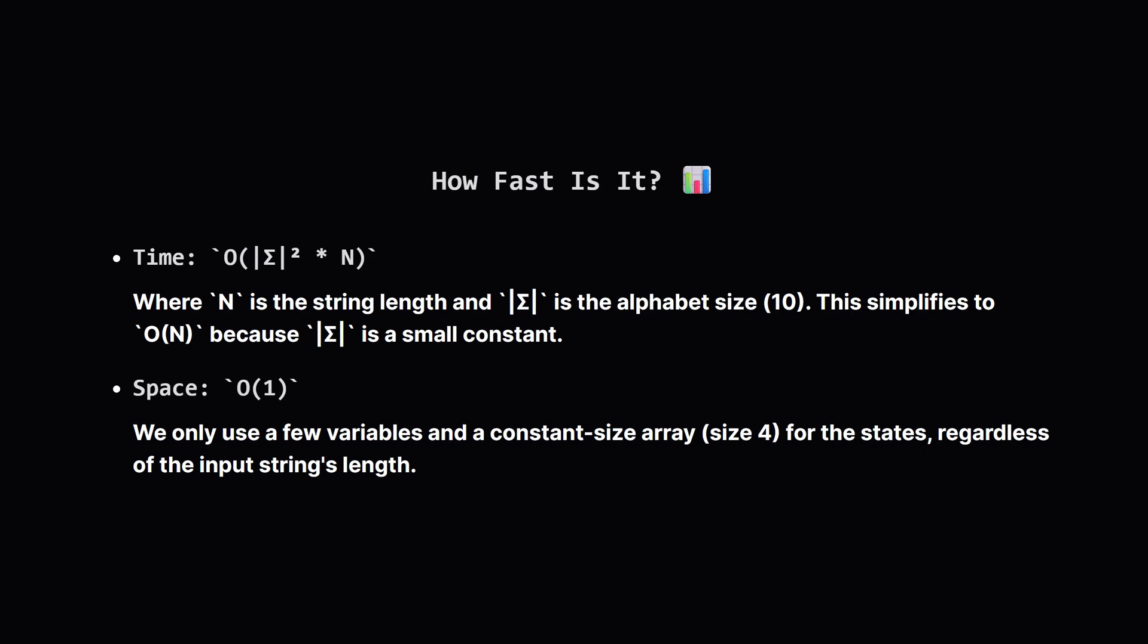So how much better is this approach? It's a huge improvement. The time it takes is proportional to the size of our alphabet squared times the length of the string. Since our alphabet is just the 10 digits, this is basically a constant, 90, times n. We call this big O of n, or order n time, which is very efficient. We just have to scan through the string a fixed number of times, and the space we use is tiny. We just need a few variables, and that little state tracking array of size 4. This doesn't grow with the input string, so we call it order 1, or constant space.